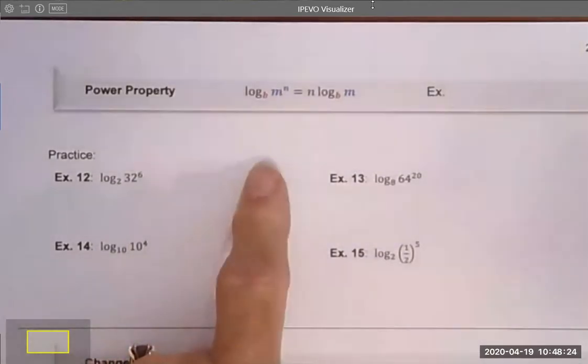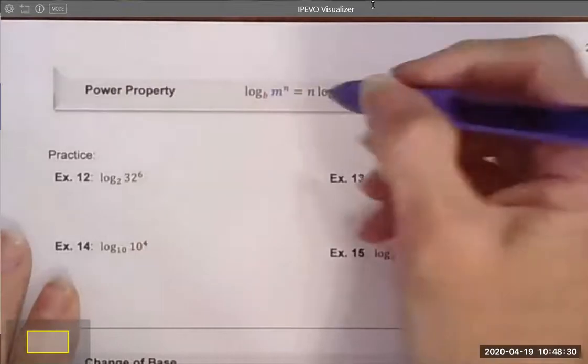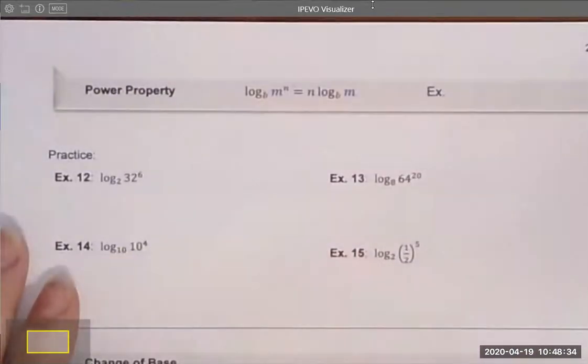In my simple mind, essentially what we're doing here is I am going to take that exponent and that exponent sort of just jumps to the front of my logarithm statement.